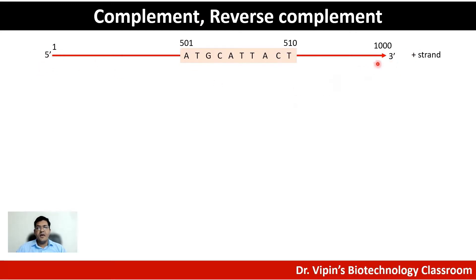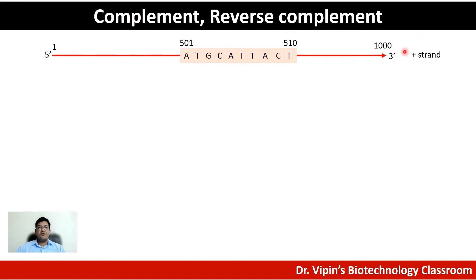The blunt end represents the five prime end and the arrowhead represents the three prime end. In this DNA you are marking your nucleotides — position one, position one thousand, and in between you're looking at a nucleotide sequence of 10 bases, positions 501 to 508. Most databases only have one strand sequence, known as the plus strand. You don't need to store the minus strand because it can be derived directly from the plus strand following the base complementarity rule.